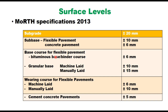For base course in flexible pavement: bituminous base course or binder course is plus or minus 6 mm, and granular base course when laid by machines is plus or minus 10 mm, and when manually laid it is plus or minus 15 mm. For wearing course in flexible pavement, it is plus or minus 6 mm for machine-laid layer and plus or minus 10 mm for manually laid, like premixed carpet. Cement concrete pavement is plus or minus 5 mm.